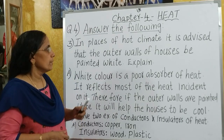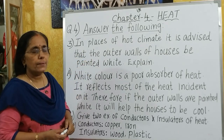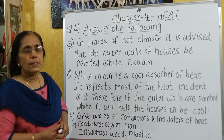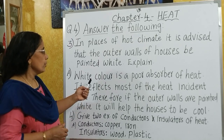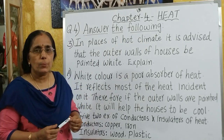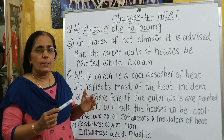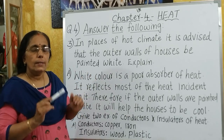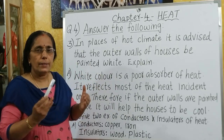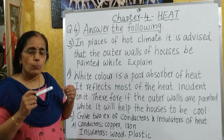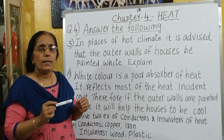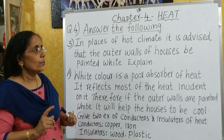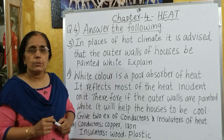In places of hot climate, it is advised that the outer walls of houses be painted white — explain. White color is a poor absorber of heat; maximum heat that falls on white color is reflected back. Therefore, if the outer walls of a house in a hot area are painted white, it reflects maximum heat and makes the house comparatively cooler. That is why it is advised to paint the outer walls white.